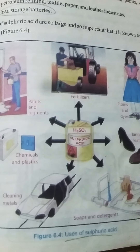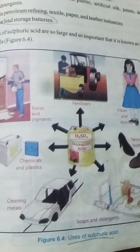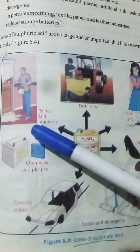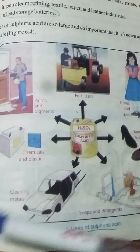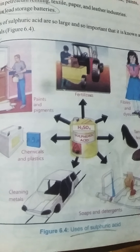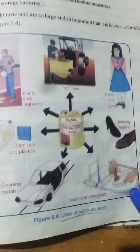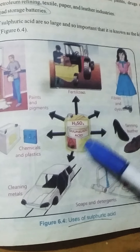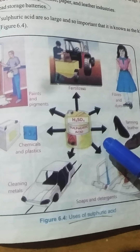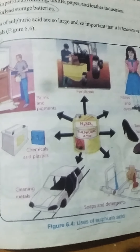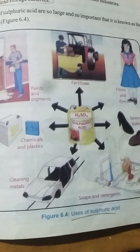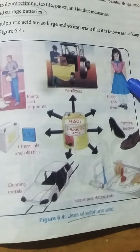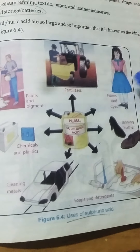Sulfuric acid is also used in the formation of paints, drugs, and pigments. Like nitric acid, it is used in the formation of artificial silk, and also to make celluloid plastic and detergents. Sulfuric acid is also used in petroleum refining, where different types and grades of petroleum can be refined or separated. It is also used in the textile industry, paper industry, and leather industry.